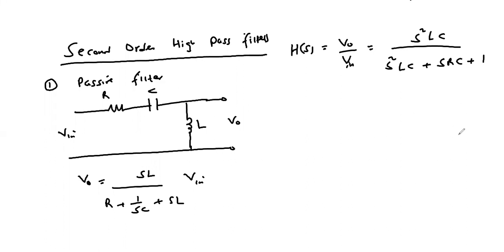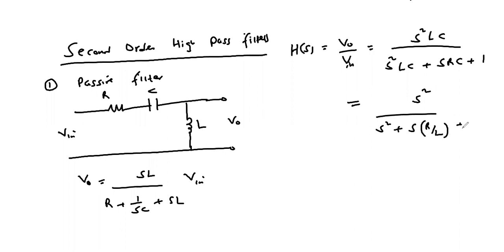We make the coefficient of s², the highest power of s in the denominator, equal to one. We divide by LC and this gives us a transfer function of s² over s² plus s(R/L) plus 1/LC. This is the implementable transfer function of the second order high pass filter.